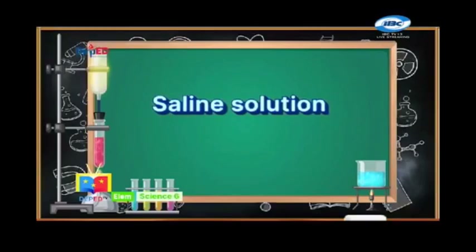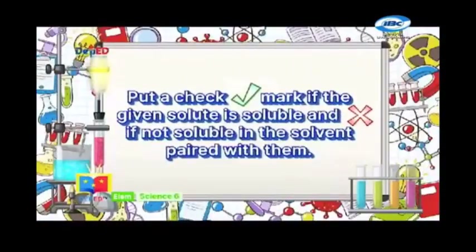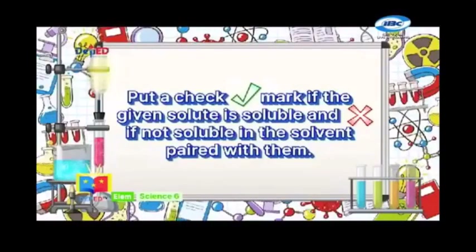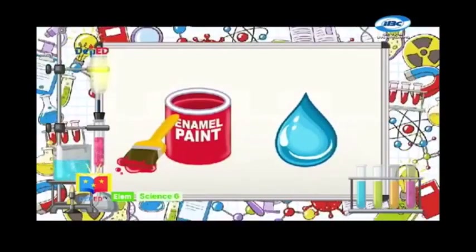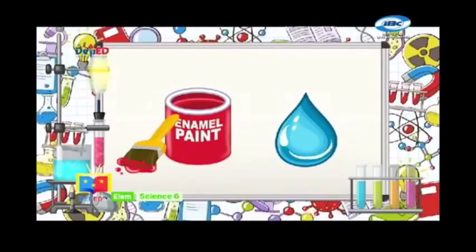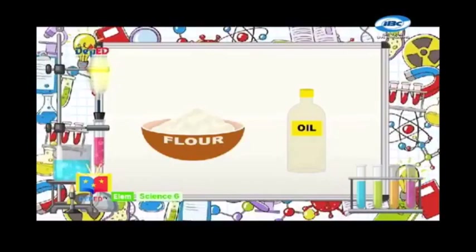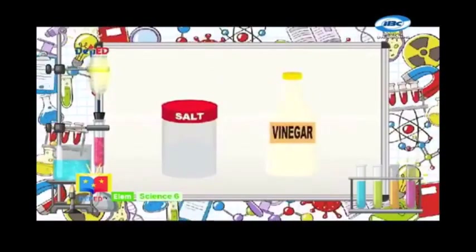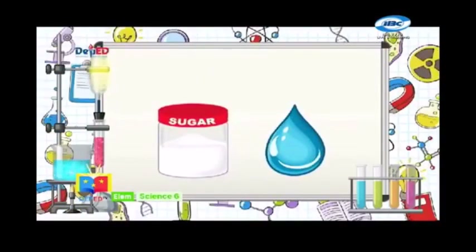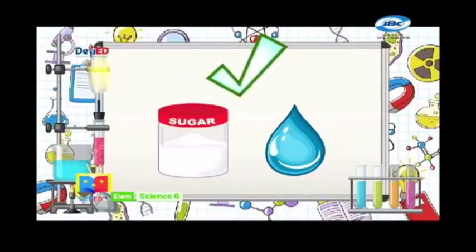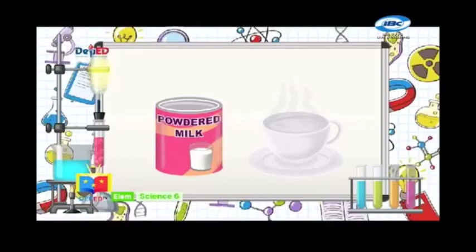For saline solution, the solute is salt. Part B: Put a checkmark if the given solute is soluble and X if not soluble in the solvent paired with it. Number six, enamel paint in water — the answer is X. Number seven, flour in oil — the answer is X. Number eight, salt in vinegar — the answer is a checkmark. Number nine, sugar in water — the answer is a checkmark. And number ten, powdered milk in hot water — the answer is a checkmark.